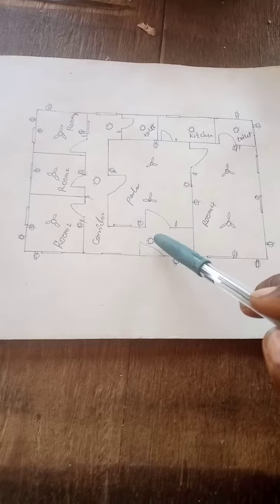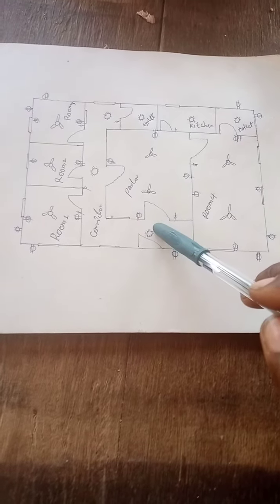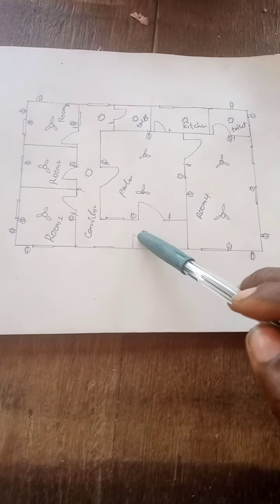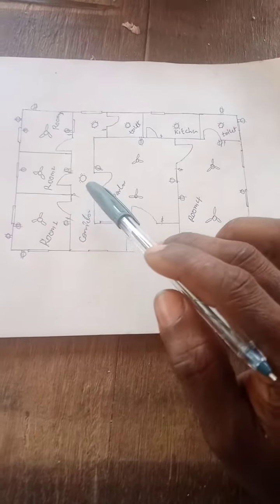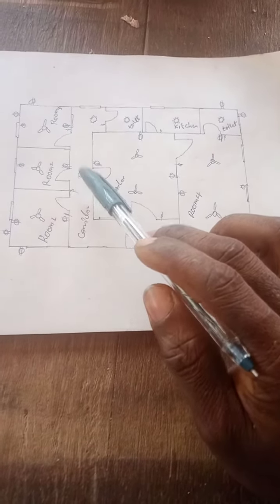This is the pass, the corridor. We have one lighting point once entered inside the house. I have one lighting point here. From that, towards the three rooms here, I have another lighting point. At the edge here I have another lighting point towards the toilet.